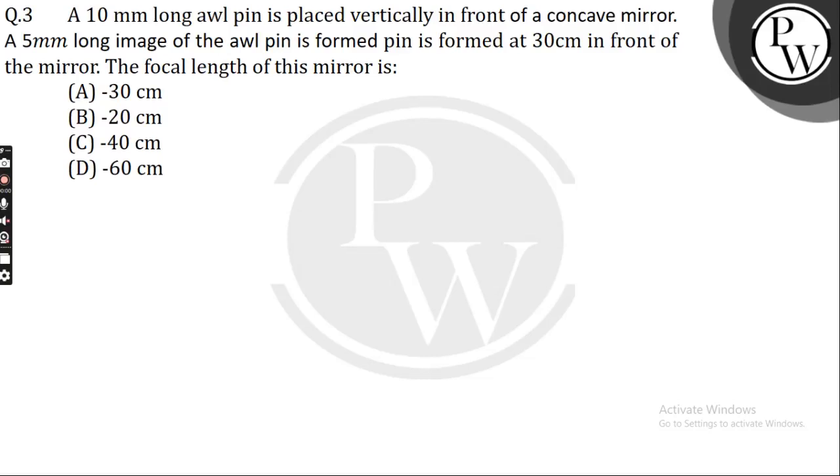A 10 mm long awl pin is placed vertically in front of a concave mirror. A 5 mm long image of the awl pin is formed at 30 cm in front of the mirror. The focal length of this mirror needs to be found.